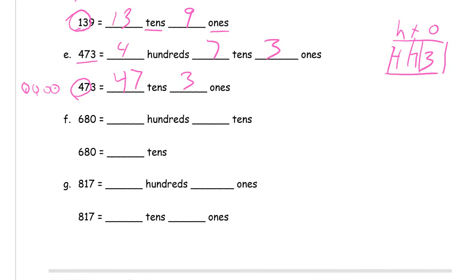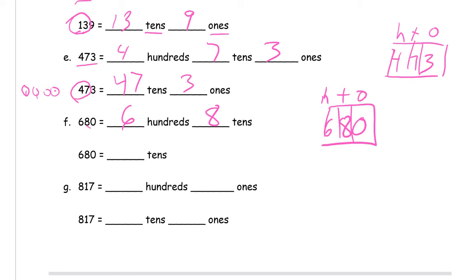Six hundred eighty, six hundreds, eight tens. Right, if you put that in an HTO chart, you'd have your six hundreds and your eight tens. You'd have zero ones, so you don't need any ones. And that's sixty-eight tens.